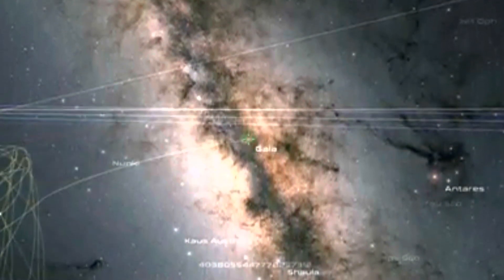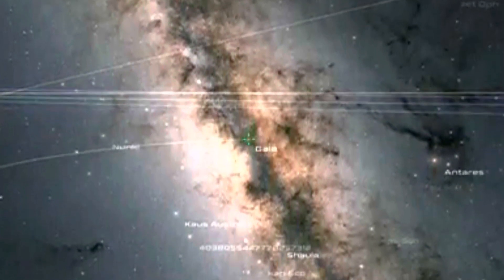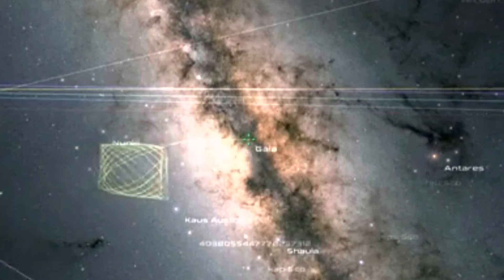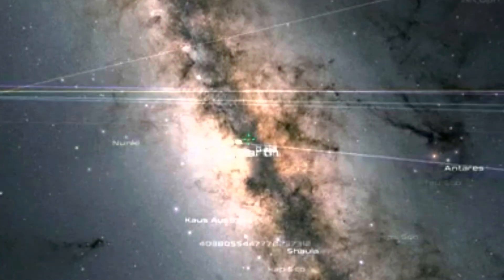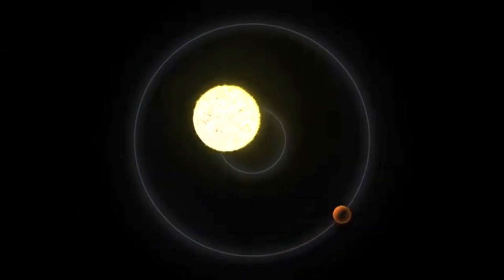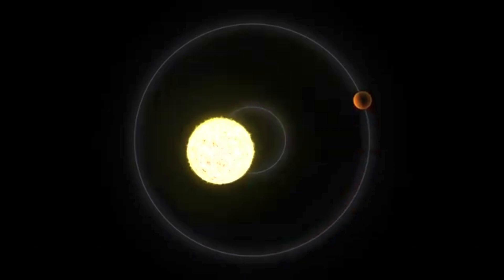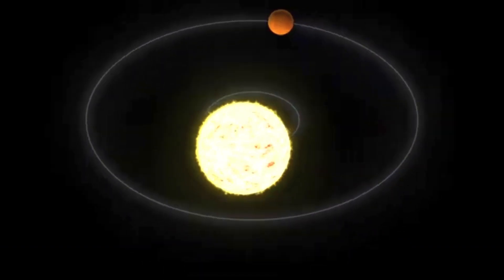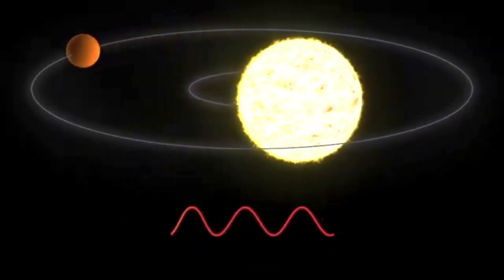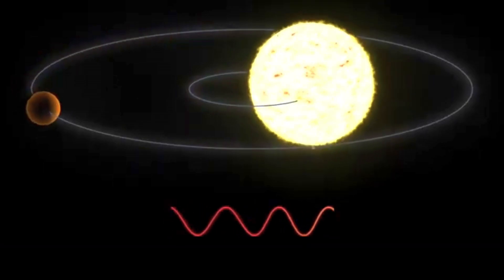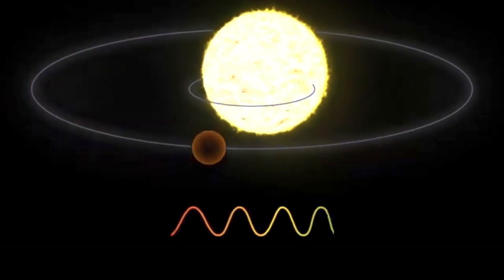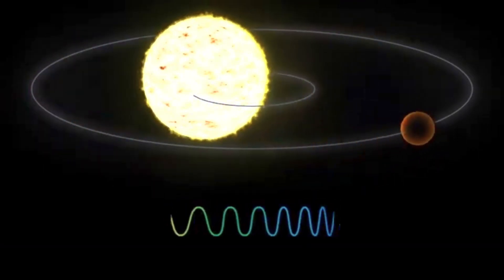Gaia's map is already changing the way we do astronomy. It's helping scientists model how the Milky Way evolved, where it came from, how it grew, and where it's headed next. It's refining our search for dark matter, based on how stars move through invisible gravitational fields. And it's improving how we find exoplanets, by tracking tiny wobbles in a star's movement, caused by an orbiting world we can't see directly.